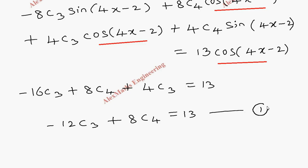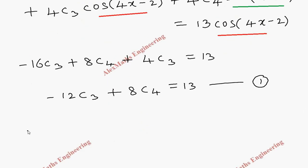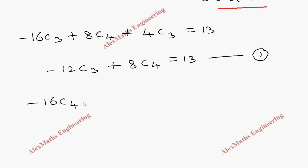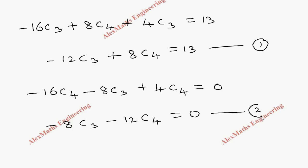In the same way, we compare the coefficients of sin(4x − 2) on both sides. On the left-hand side we have −16c4 − 8c3 + 4c4. On the right-hand side, there is no sin term, so it equals 0. Adding like terms: −8c3 − 12c4 = 0. This is our second equation.